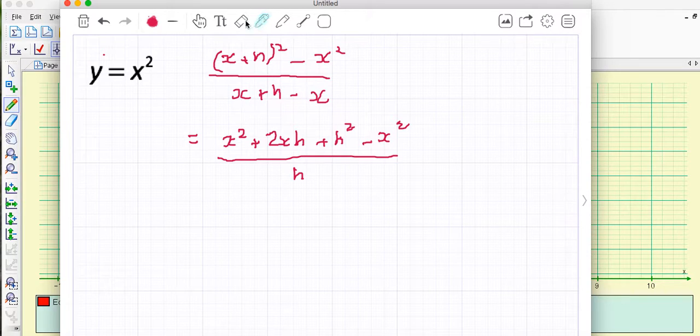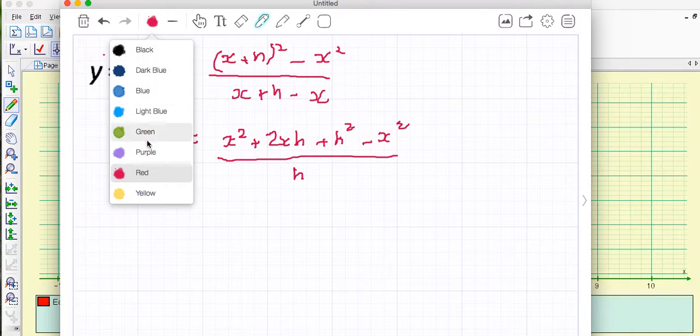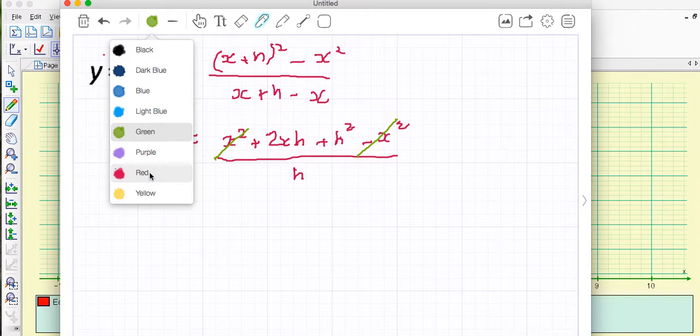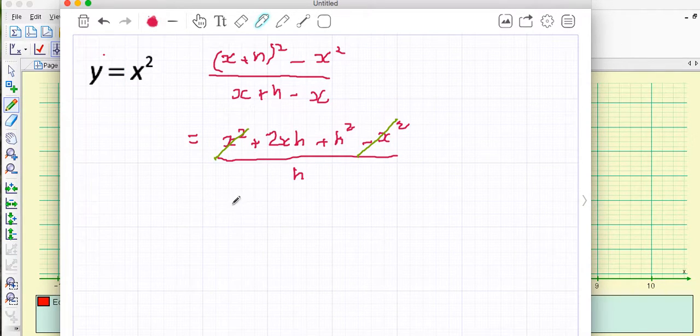Now if we look at the top as things that just sort of cross out on the top the x squared that's gone because I've got a minus x squared here and this is an h and this is an h squared and there's an h on the bottom so when I simplify all of that I can get rid of the h's here and it becomes 2x plus h over 1 or 2x plus h.